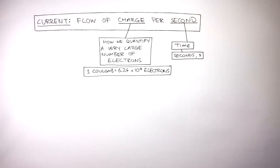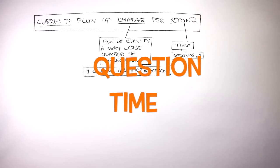So the flow of charge per second just means a very large number of electrons are flowing per second. It's question time. Attempt these questions to check your understanding.